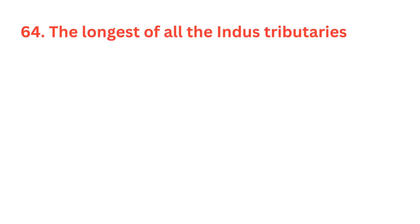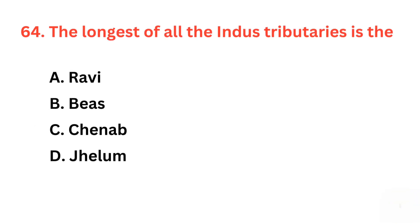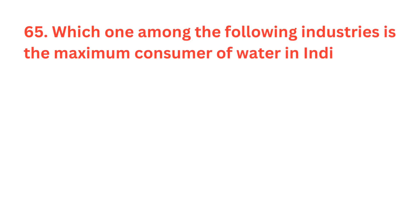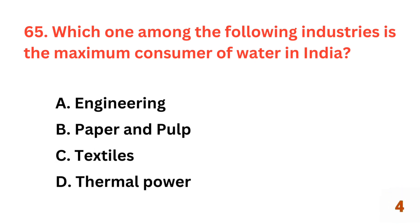The longest of all the Indus tributaries is? The correct answer is option C, Chenab. Which one among the following industries is the maximum consumer of water in India? The correct answer is option D, thermal power.